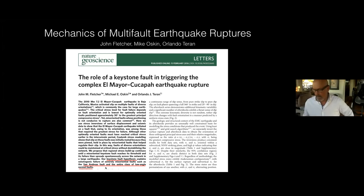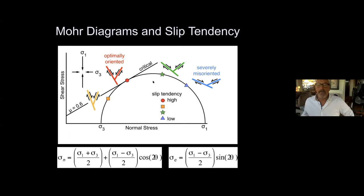I'll start off by defining a few technical terms. Slip tendency is a parameter that measures the degree of fault misorientation. Faults of different orientations plot at different positions on a Mohr's circle. Those that plot close to the line of critical frictional failure are optimally oriented and have a high slip tendency. Those that plot far from the failure envelope are misoriented and have a low slip tendency.